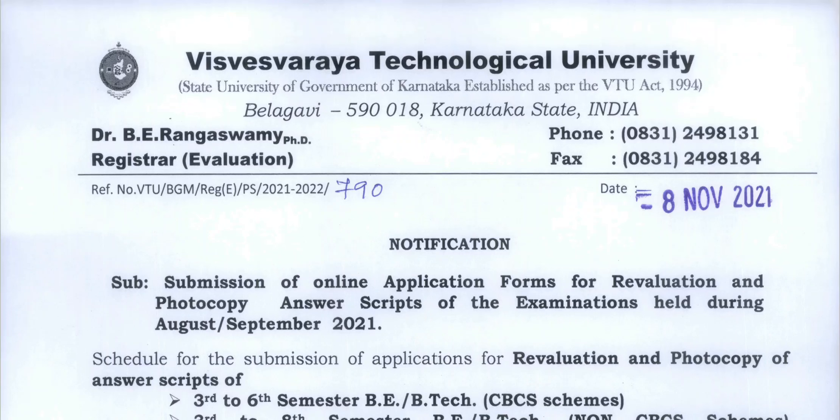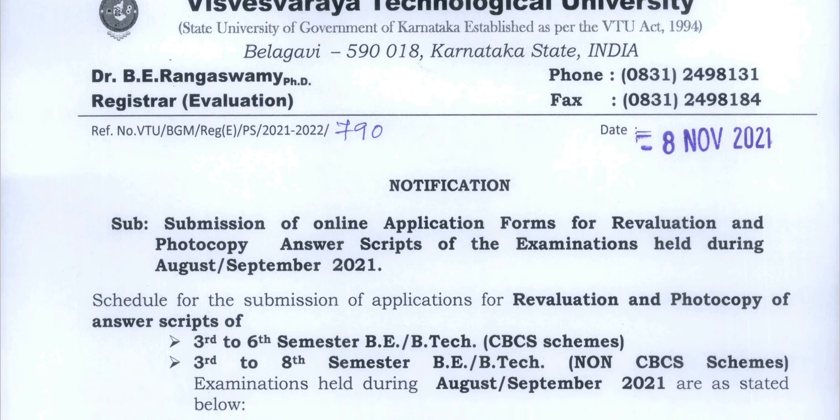Hello everyone, welcome back to Constructive Knowledge. Here is a video update regarding the re-evaluation and photocopy of examinations held during August and September 2021. The online application starts from 9th November and the last date for filling this application form is 13th November. If you have any backlogs or got fewer marks, you can apply for re-evaluation.